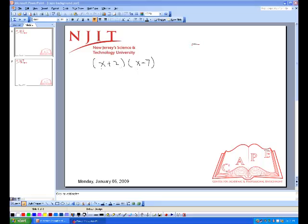FOIL method - F stands for the first term. O stands for outside. I stands for inside. And L stands for last term.